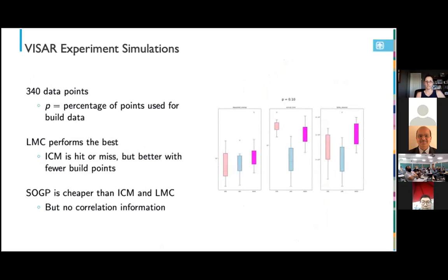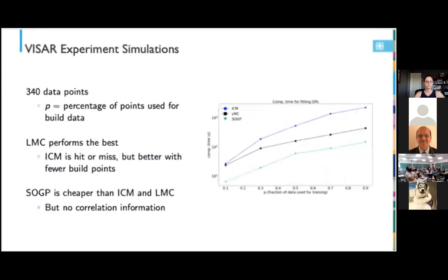So if we suppose we have Q covariance functions and for each one we sample RQ latent functions, which we call U, then we can write out each output function as a linear combination of these latent functions. The cross covariance is then given by another linear combination where those AQs contain the RQ coefficients. The AQ times AQ transpose creates a matrix BQ, which is called the co-regionalization matrix. There are two special cases here. If we set Q equal to 1, we have the intrinsic co-regionalization model or ICM. And if RQ is equal to 1, we have the semi-parametric latent factor model or SLFM.